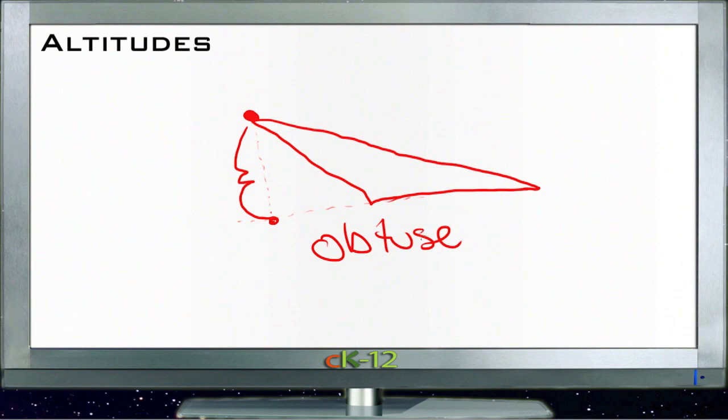So there are three ways that you can locate an altitude: it'll either be along one of the legs for a right triangle, or inside the triangle if it's an acute triangle, or outside the triangle if it's an obtuse triangle. Okay, let's take a look at the example questions.